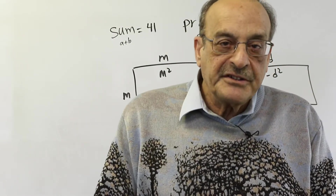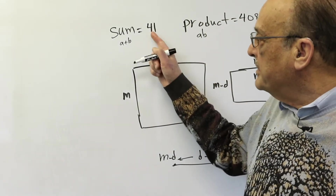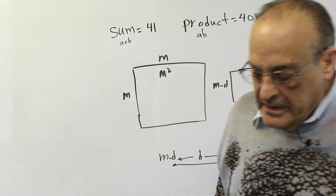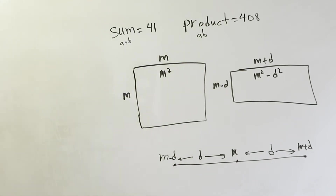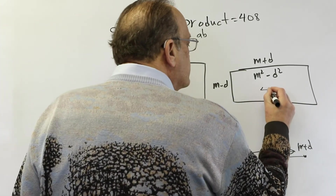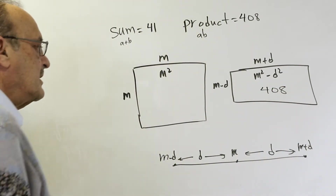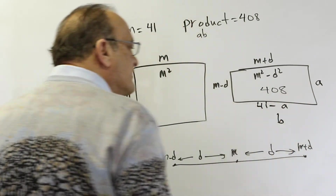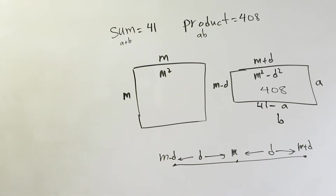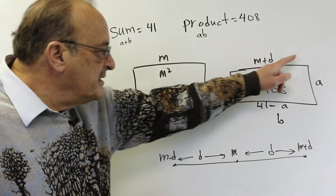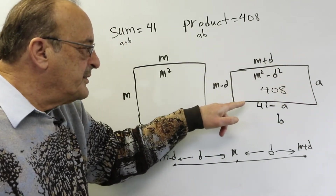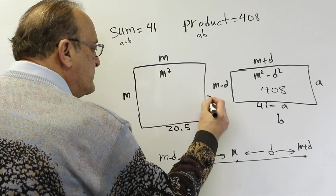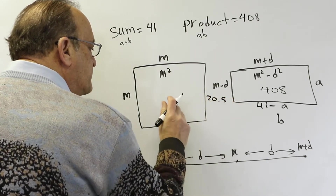We're going to do a second problem, similar to the first. The only difference is our sum is odd and our product is even. When the parity is not the same it makes it slightly harder, but we can deal with that. Our product is going to be 408 and our sum is 41. So this will be a and this will be 41 minus a, which is also b. The perimeter is the same, so the semi-perimeter is the same. If these two sides add to 41, these two sides also add to 41, which makes each side 20.5.